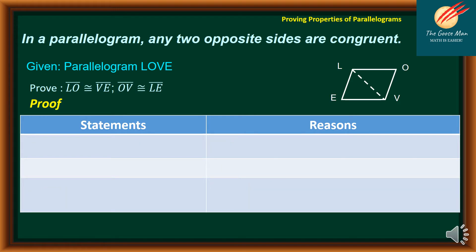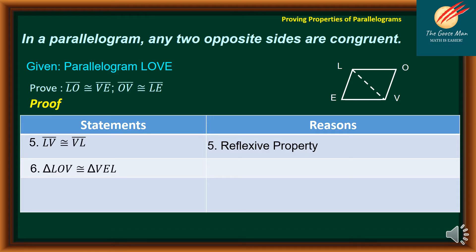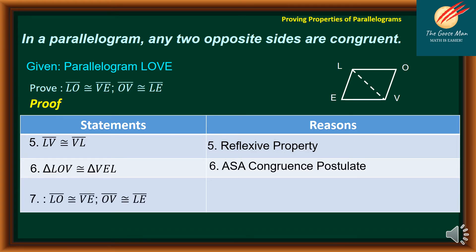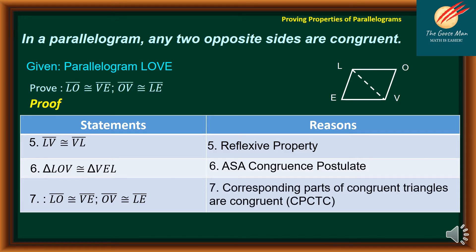Continuing with our proof for number five, line segment LV is congruent to line segment BL — the reason is the reflexive property. For number six, triangle LOV is congruent to triangle BEL. The reason is angle-side-angle, or ASA congruence postulate. Therefore, we can say that line segment LO is congruent to line segment BE, as well as line segment OV is congruent to line segment LE. Our reason is corresponding parts of congruent triangles are congruent — in short, CPCTC.